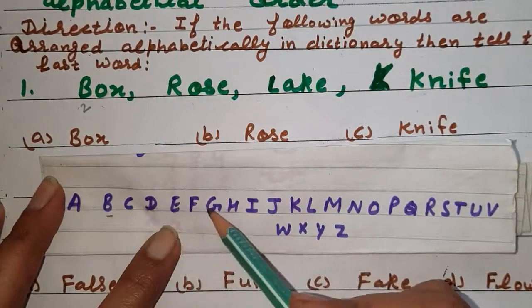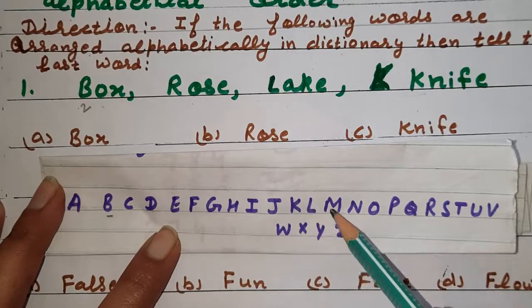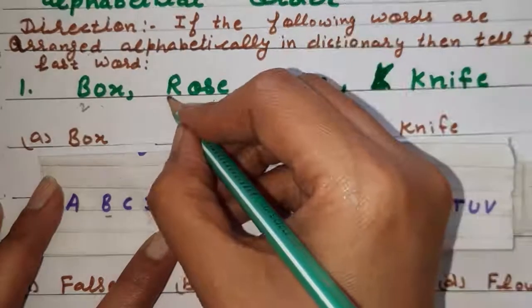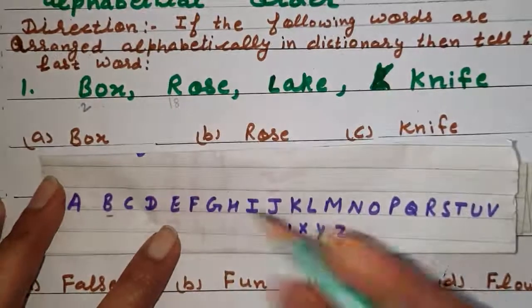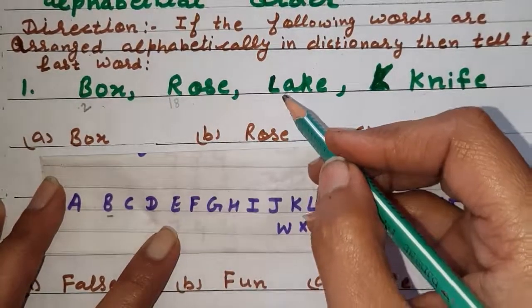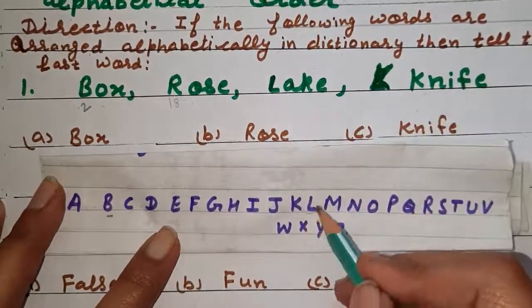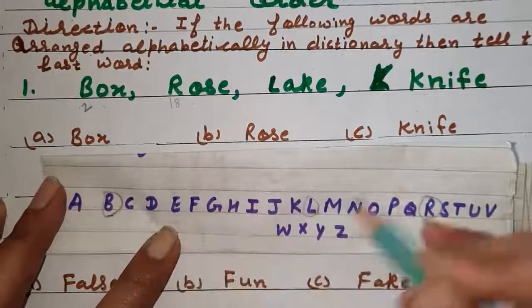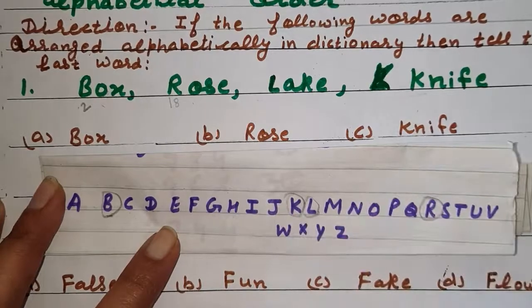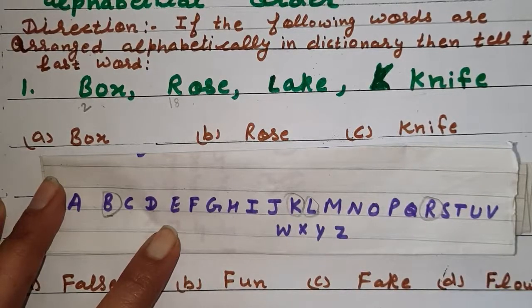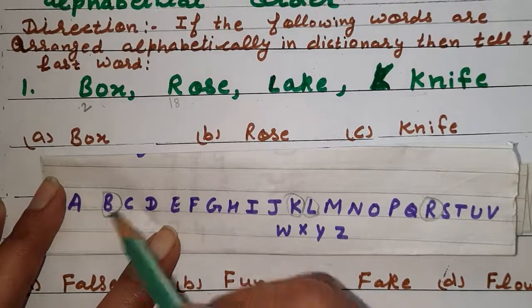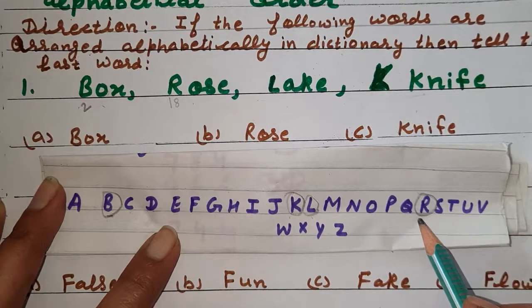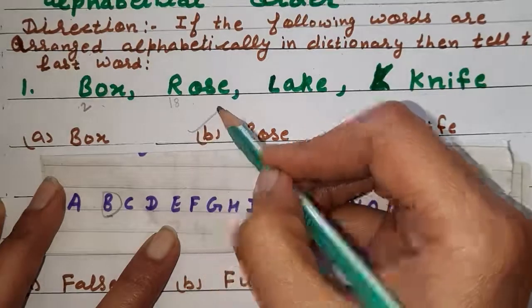R is at position 18 in the alphabet. Without writing the numbers also you can write down. Let's see L is here, R is here, B is here, and K. So which alphabet is at first place? B. Second K. Third L. So last will become R, that is Rose. Understood?